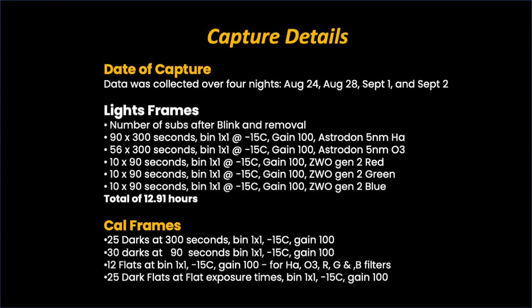Data capture occurred over four clear moonless nights, which ended on September 2nd. The goal was to primarily capture hydrogen alpha and oxygen 3. As you can see from the figures on screen, a lot more hydrogen alpha was captured than oxygen 3, and the reason for that will become evident when we look at the blink data. In addition to the narrowband data, RGB data was captured — only 10 subs at 90 seconds for each primary color. The goal was to extract some RGB stars for use in the final image.